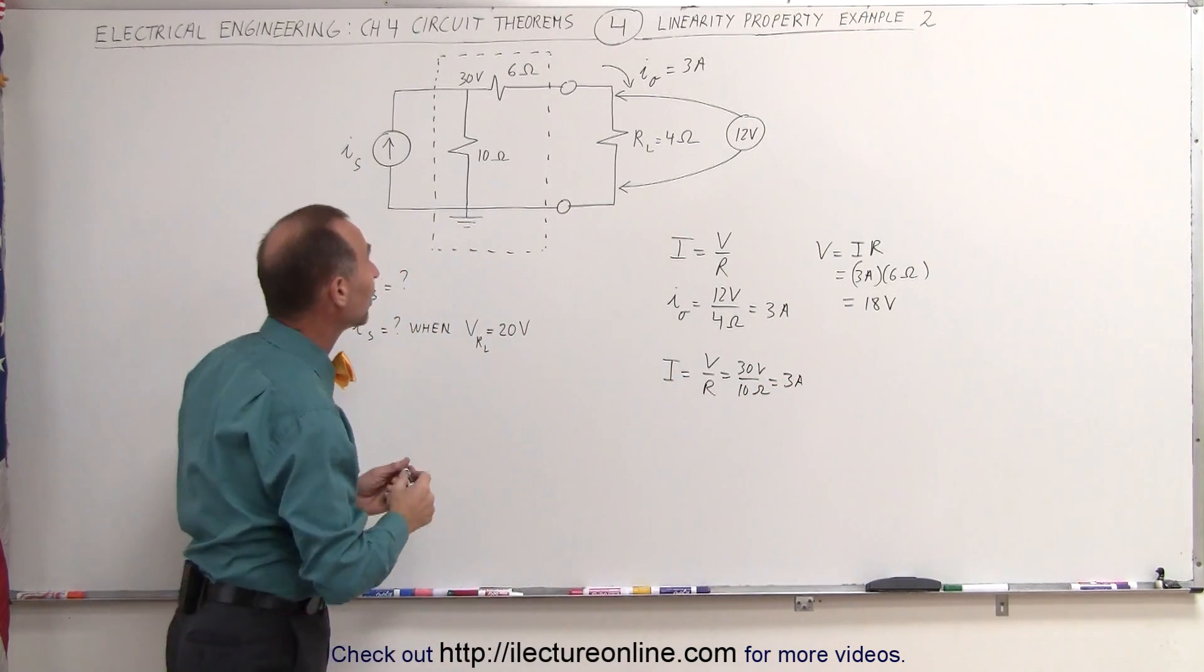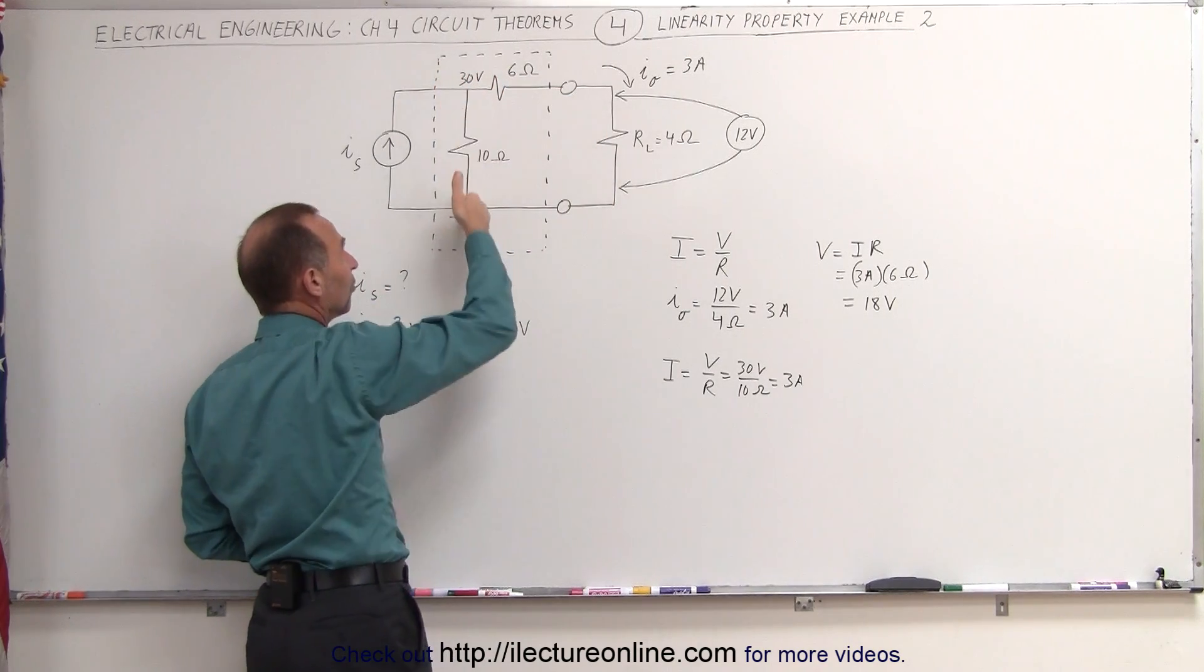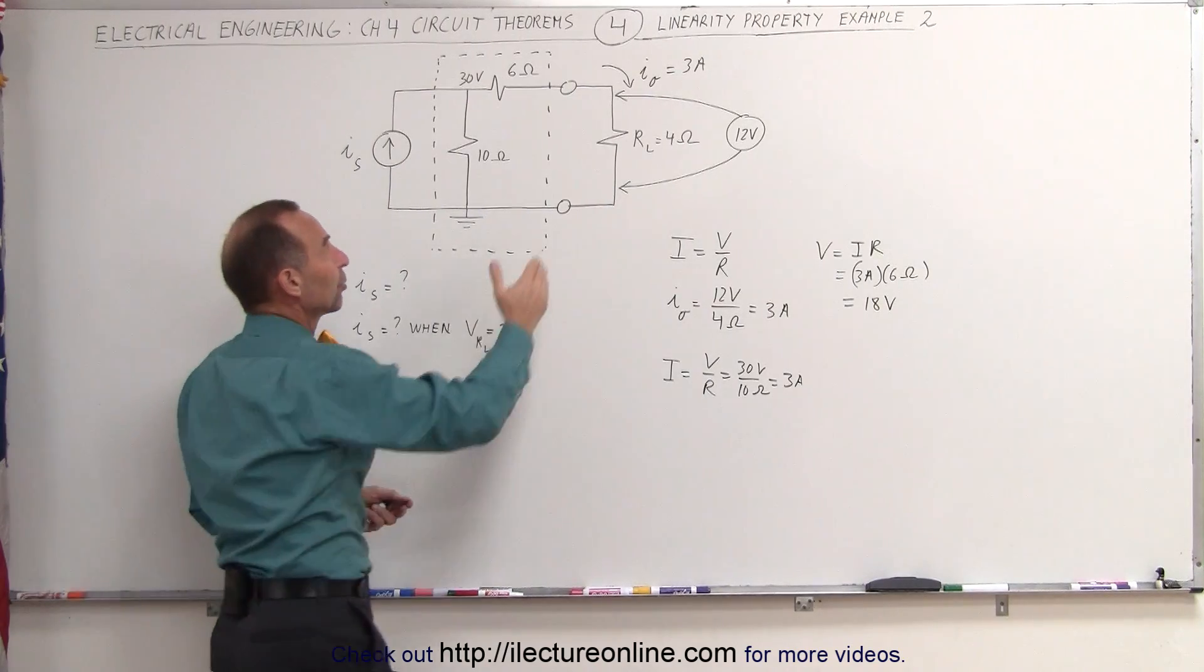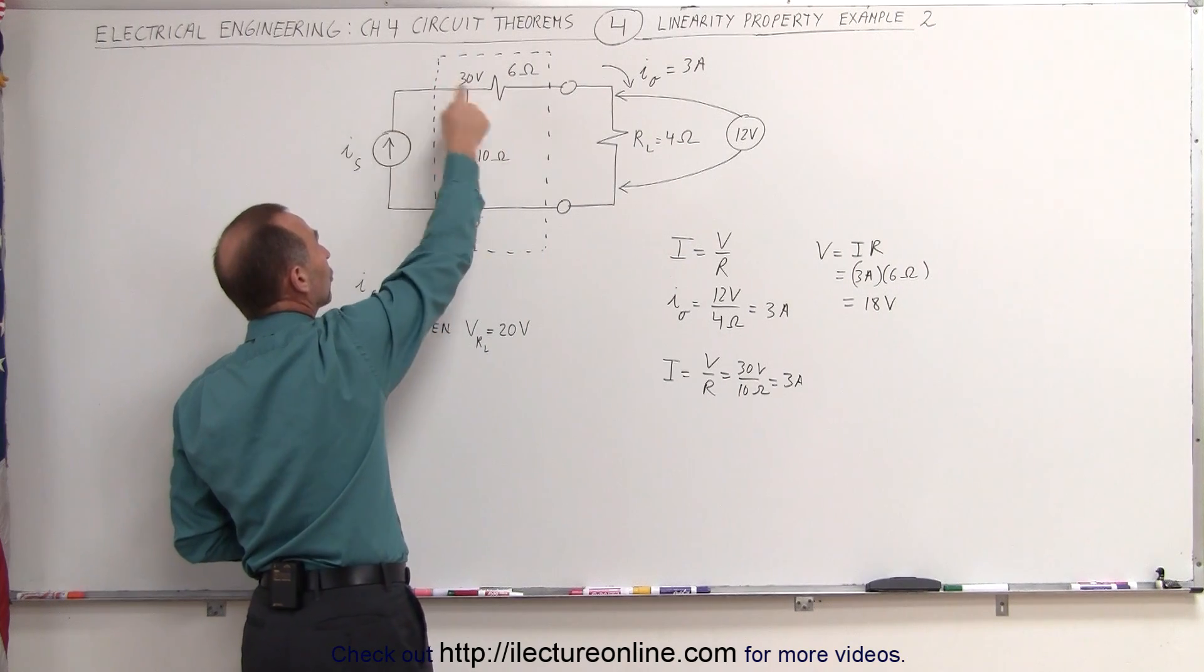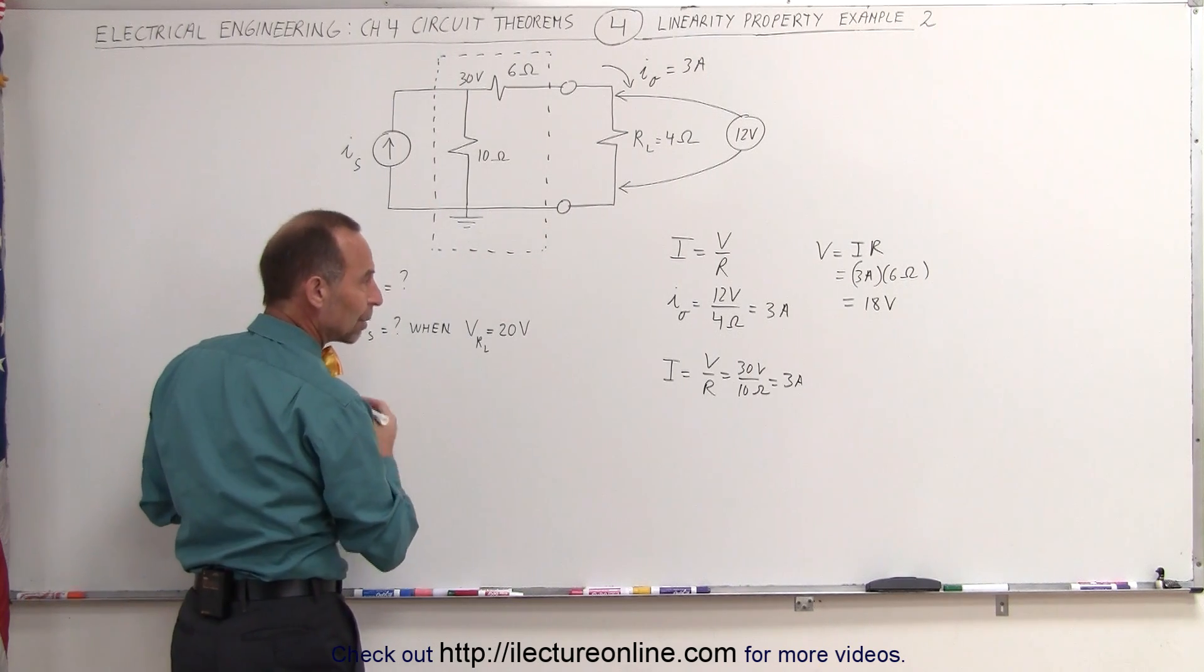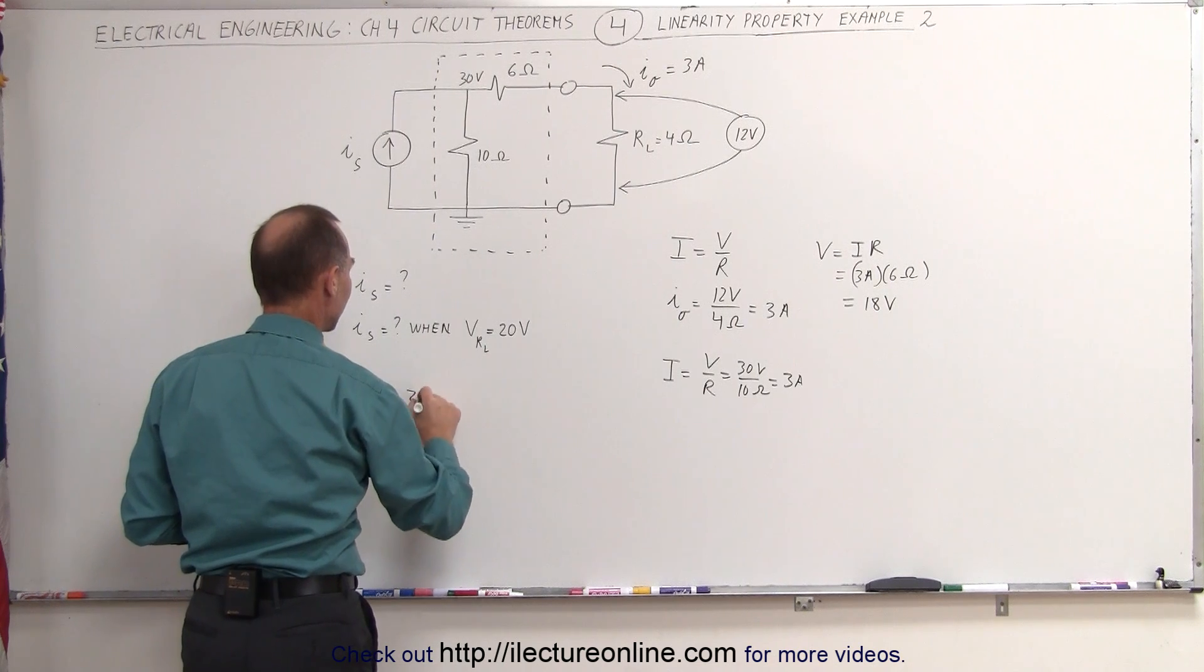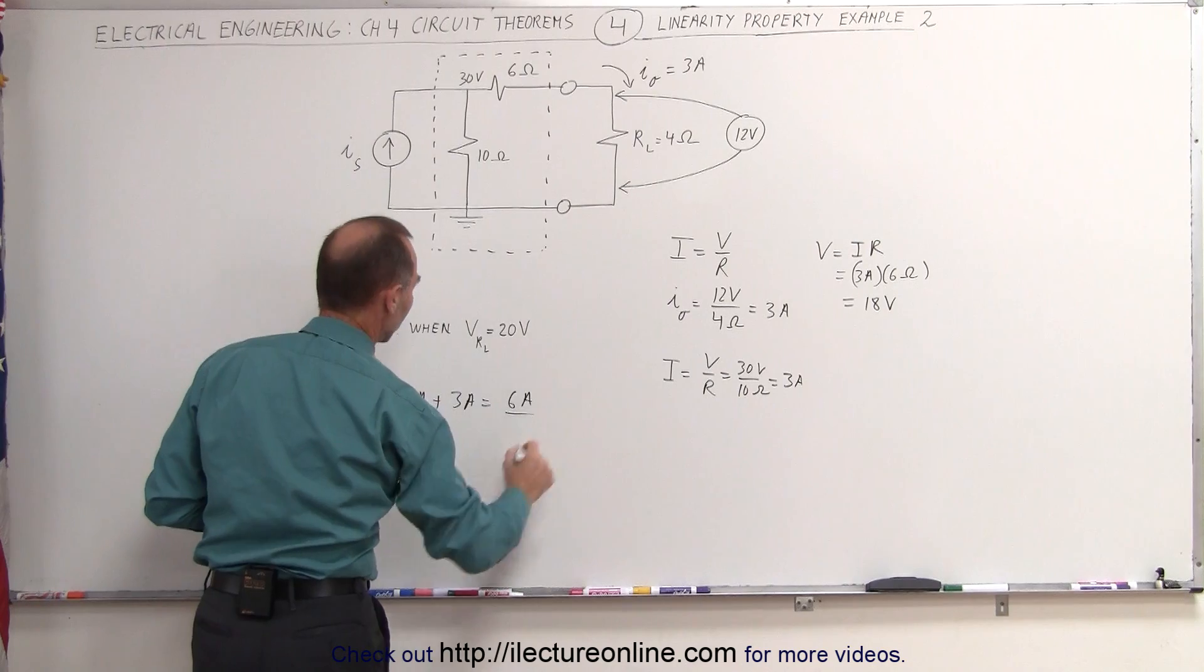Now that could have also been found by realizing that the resistance on this branch is 10 ohms, the resistance on this branch is 10 ohms. That means they both must carry the same amount of current, 3 amps on this branch and 3 amps on this branch, which means that the total current through the source and through the driver on the circuit has to be the two currents together, 3 plus 3 being 6 amps. So I of the source is equal to 3 amps plus 3 amps, which is equal to 6 amps at the source.